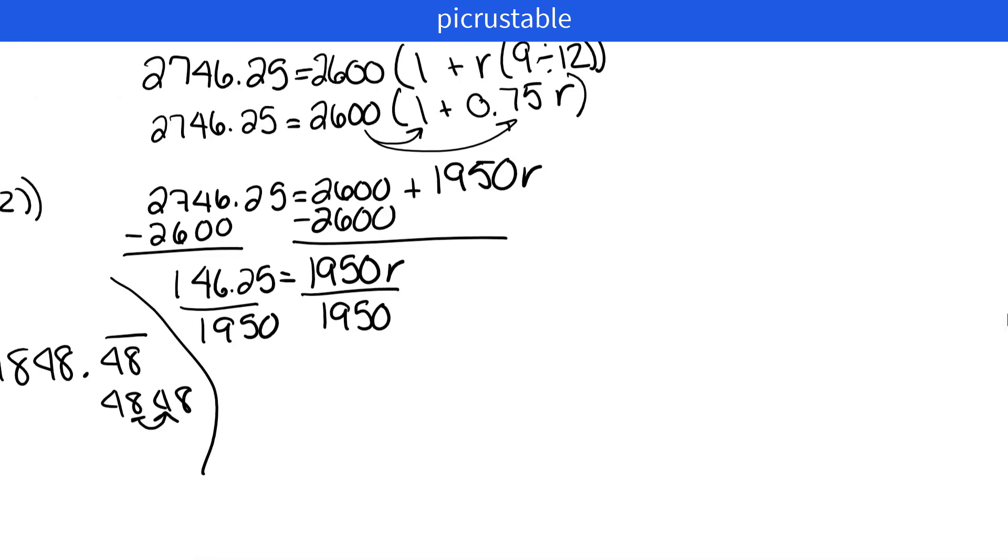All right. Let me make a little thing here. R is going to equal 0.075. Well, remember, we want this as a percent, not a decimal. So we're going to move two places to the right. And we end up with 7.5% is our rate.